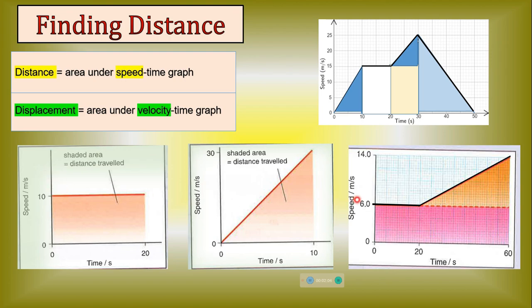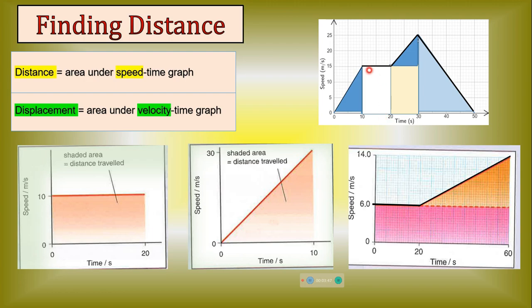Different shaded areas represent the distance traveled in each section. To calculate the total distance traveled from 0 to 50 seconds, we calculate the area under the graph broken into rectangles and triangles. From 0 to 10 seconds, the distance is given by the area of a triangle. From 10 to 20 seconds, the shape is a rectangle. From 20 to 30 seconds, it is a rectangle plus a triangle. From 30 to 50 seconds, it is a triangle. We calculate each area separately and add them to get the total distance.